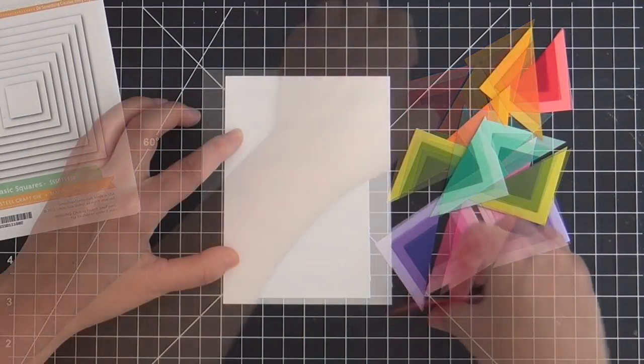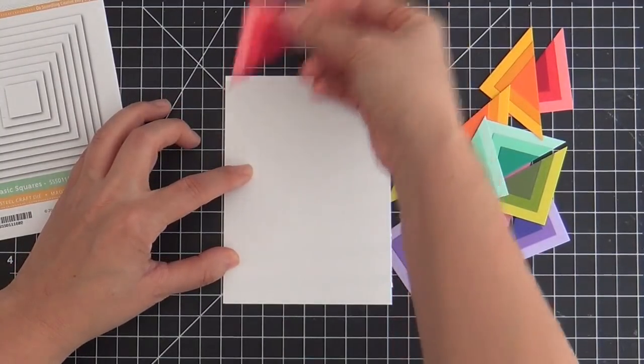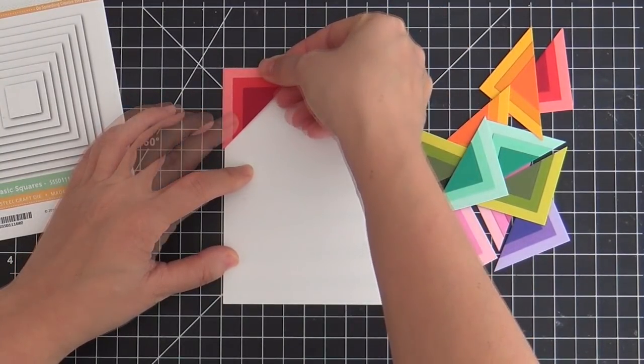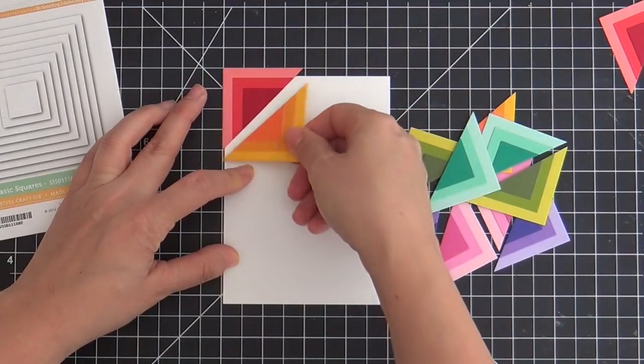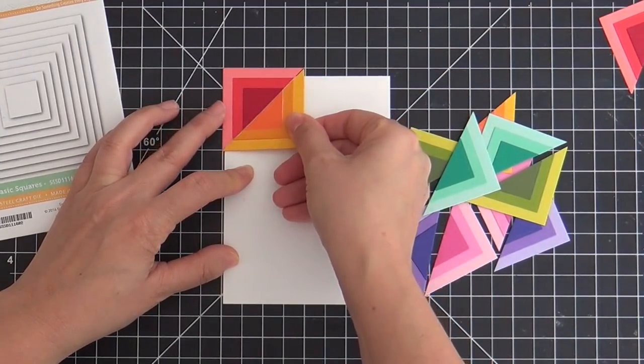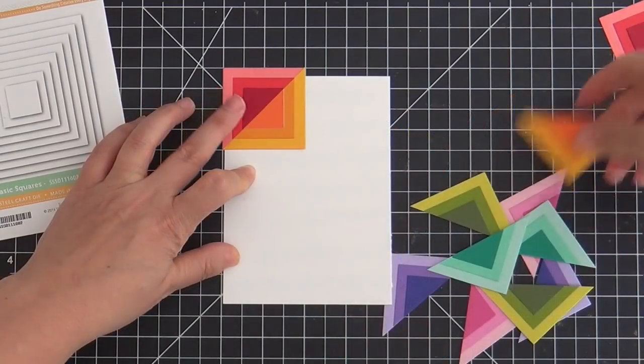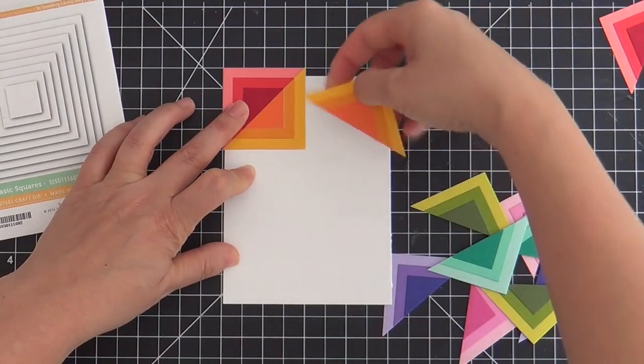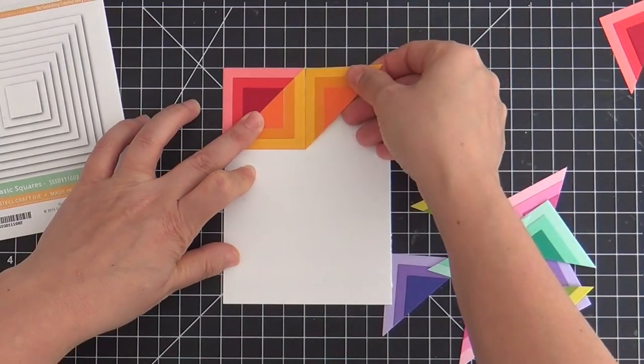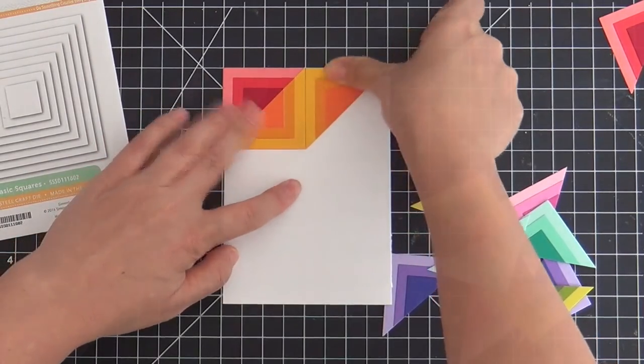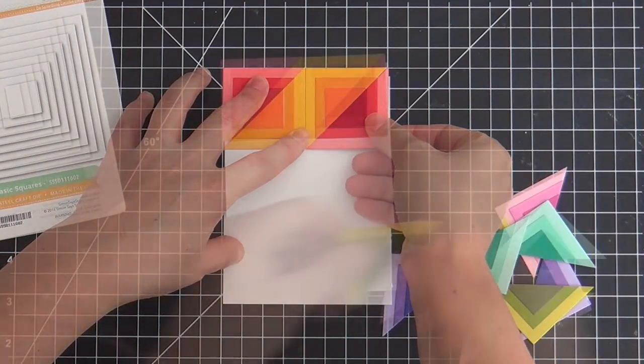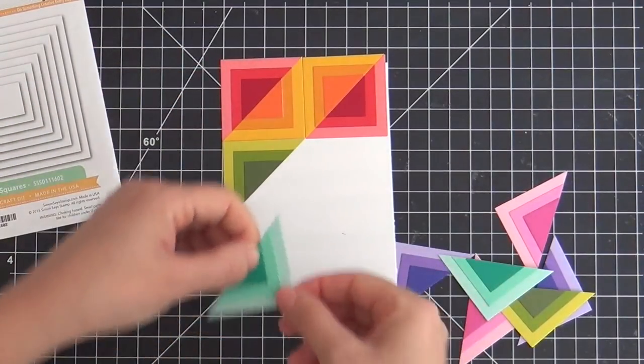So I got all the squares cut in half. I cover a panel with tape runner. I'm going to adhere these all down, mixing and matching the colors. And of course, there are a million and one ways that you could arrange these colors, and I honestly don't think you could do anything to wreck it at this point. I think any arrangement would look shazam fantastic.